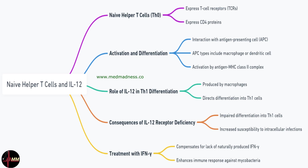A seven-year-old child is repeatedly hospitalized for severe bacterial and fungal infections. Laboratory tests reveal a defect in the IL-12 signaling pathway. Which type of immune response is most likely impaired in this child? Keep your answer in mind as we explore the mechanisms behind this question.